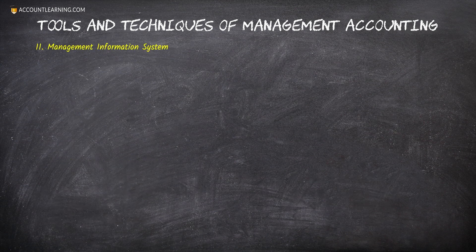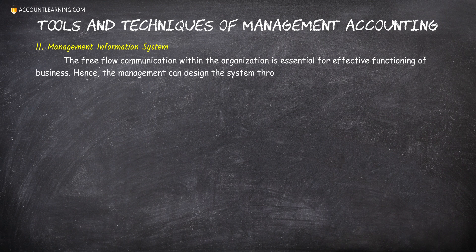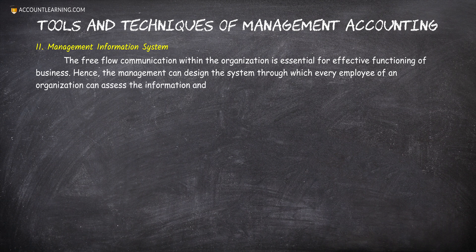11. Management Information System. The free flow of communication within the organization is essential for effective functioning of business. Hence, the management can design a system through which every employee of an organization can access the information, and use it for discharging their duties and taking quality decisions.